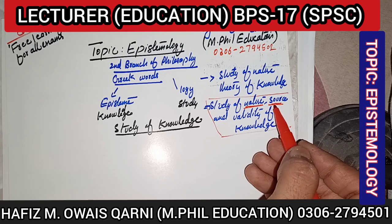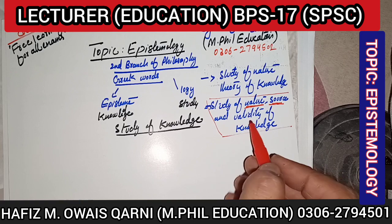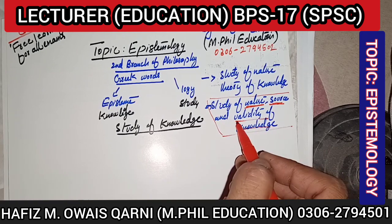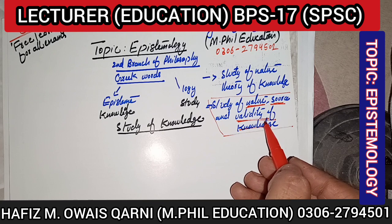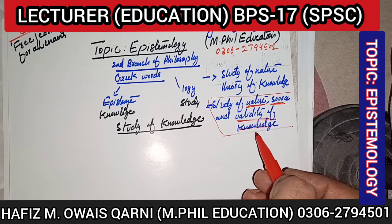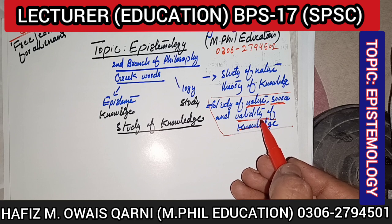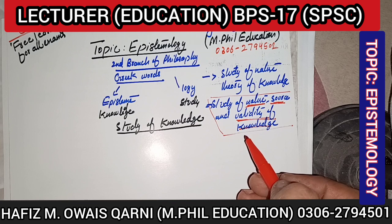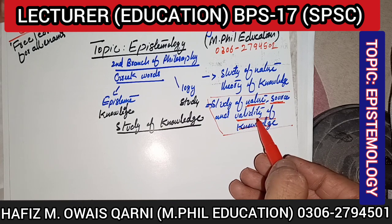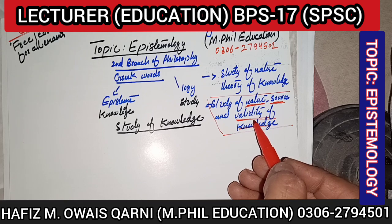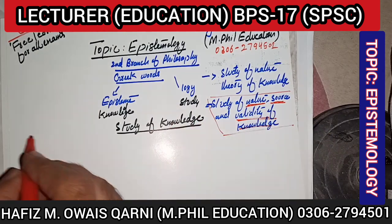In epistemology we study the nature of knowledge, where it comes from — the source — and we check the validity of knowledge. You've often seen scholars and philosophers always giving references: this was written in such-and-such book, this person said this. Then we check the validity — is what was said 200 years ago still valid today? With the development of knowledge and many revolutions in knowledge, is that thing still valid or not?